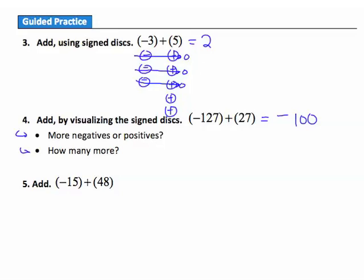Question 5: add negative 15 and positive 48. Do I have more positives or more negatives? More positives, so I'll get a positive answer. How many more positives? 48 minus 15: 8 minus 5 is 3, and 4 minus 1 is 3, giving 33 more positives. So the answer is positive 33.